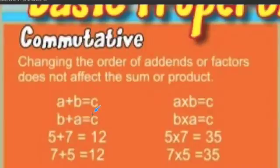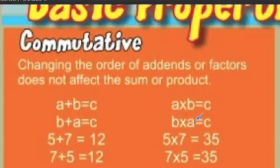With the commutative property, you're changing the order of the numbers that you're adding together, or changing the order of the numbers you're multiplying together. For example, A plus B equals C, or B plus A equals C. Or it could be A times B, or B times A equals C. This is the commutative property. It works for addition and multiplication.